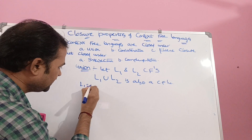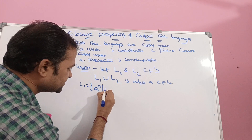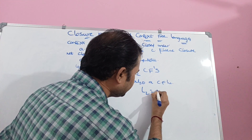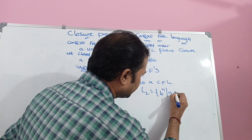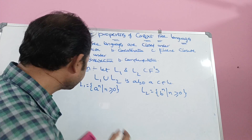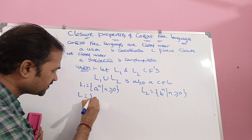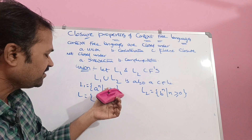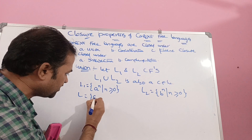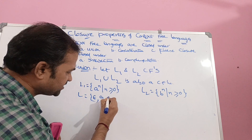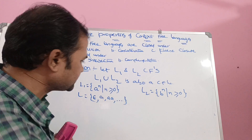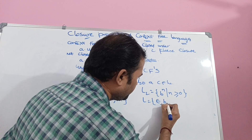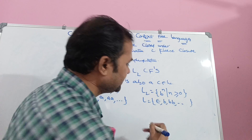Let L1 be the language {a^n | n ≥ 0}. The language contains epsilon, a, aa, and so on — any number of a's. Whereas the second language L2 is {b^n | n ≥ 0}. L2 contains epsilon, b, bb, bbb, and likewise any number of b's.